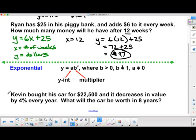So we have a question here. Kevin bought his car for $22,500, and it decreases in value by 4% every year. What will the car be worth in eight years? This time, we're decreasing by a certain percentage every year. So it's not actually by the same amount, but by the same percentage. So then we know it's exponential instead.